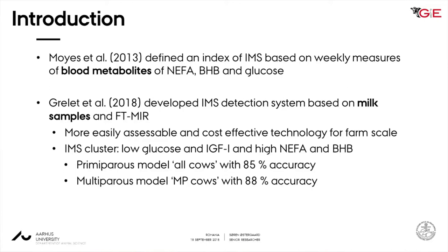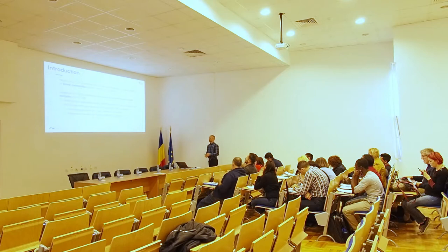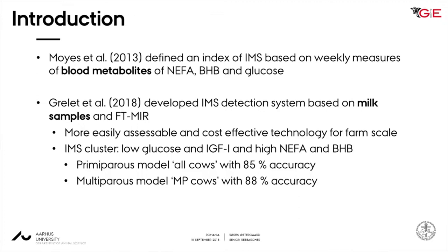This is about physiological imbalance. A study years back showed that you can provide an index of IMS based on weekly measurement of blood metabolites — that could be a good indicator of imbalanced cows. The problem was it was based on blood metabolites. To make it relevant for the industry, doing it based on milk is much more easily accessible and cost-effective. And that's what is shown in the work of Clément and colleagues.